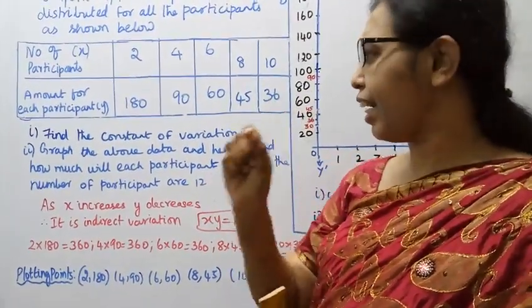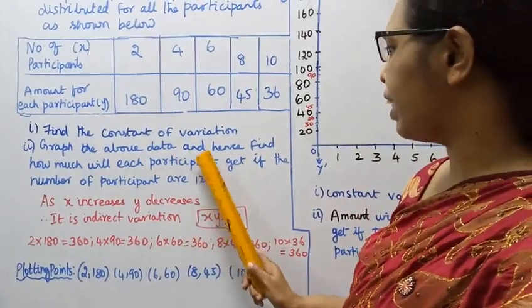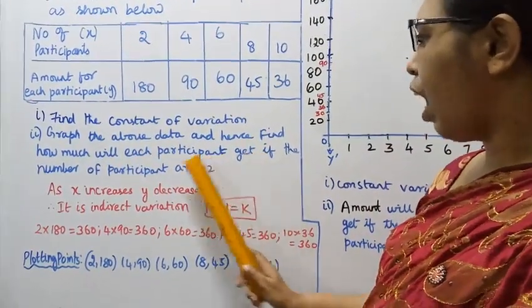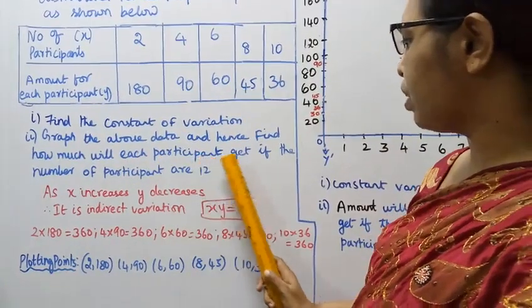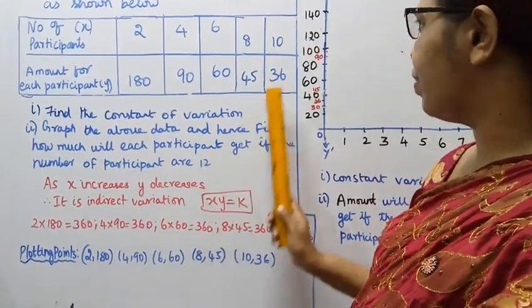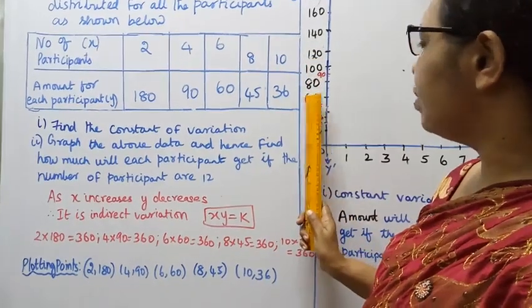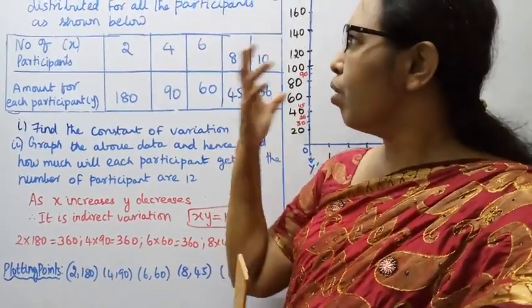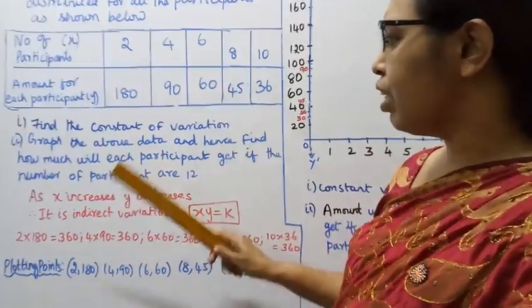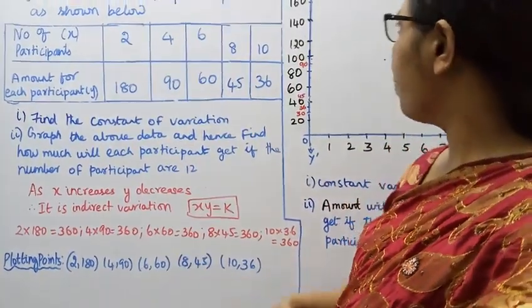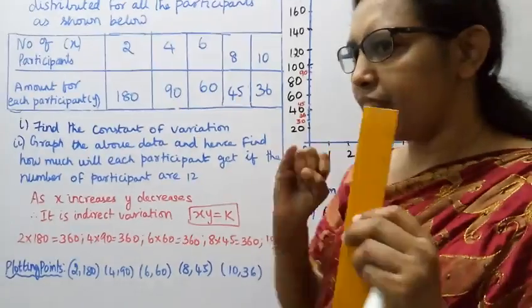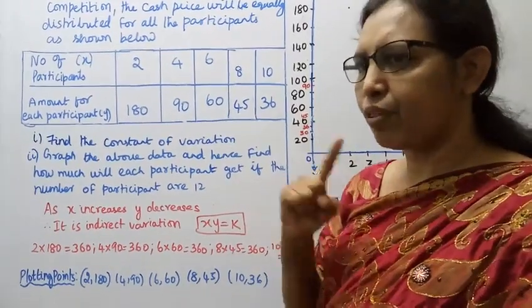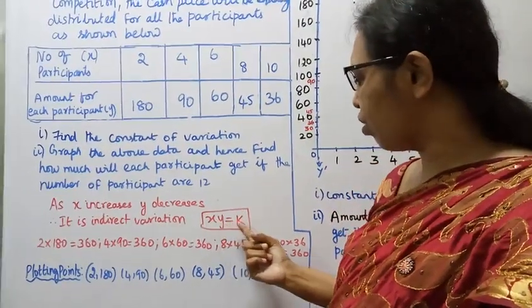The data table: 2 participants get 180, 4 participants get 90, 6 participants get 60, 8 participants get 45, 10 participants get 36. This is an indirect variation. The formula is xy equal to k, where k is the constant of variation.